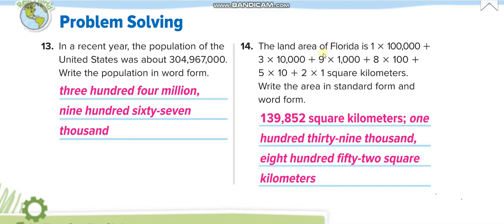They give us the land area of Florida in expanded form. First we write it in standard form: 1 at the hundred-thousands place, 3 at the ten-thousands place, and 9 at the thousands place gives 139,000. Then 8 at hundreds gives 8 times 100, 5 at tens, and 2 at ones. Standard form is 139,852. From there we make the word form: one hundred thirty-nine thousand, eight hundred fifty-two square kilometers. We write square kilometers because it is an area measurement.